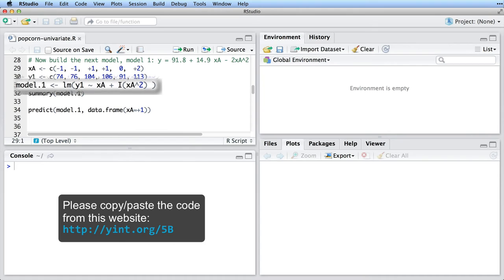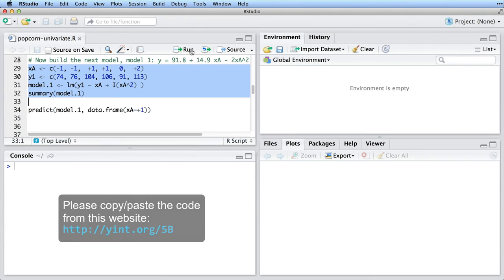And here is the R code to fit this new model with the quadratic term added. Please note that we use the capital letter I wrapped around the quadratic portion. This tells R we want to treat the quadratic in the formula as is. I is known as the as is operator.